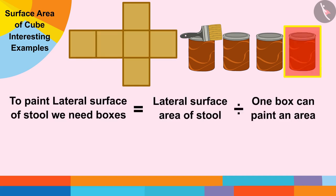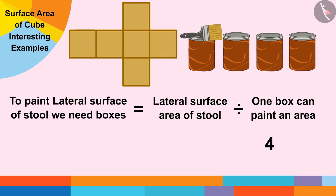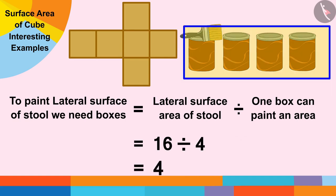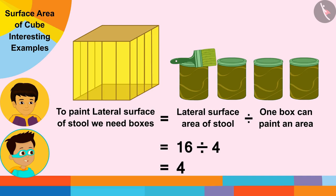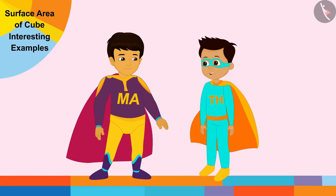The lateral surface area of the stool is 16 square feet. With one box we can paint an area of 4 square feet, so in order to paint the lateral surface area of 16 square feet we would need 16 divided by 4, that is 4 boxes of paint. Manas, you can paint the lateral surfaces of the stool with your four paint boxes! Let us go paint your stool quickly — we also have to go to play.